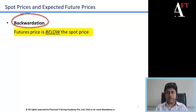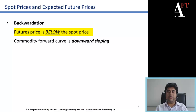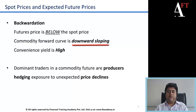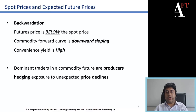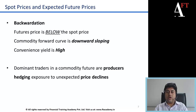The opposite of contango is backwardation, where the futures prices are lower or below the spot price. Here there is in fact high convenience yield and the commodity forward curve is a downward sloping curve. The dominant traders in commodity futures are producers who are hedging their exposure to unexpected price declines — for example, a miner of coal who wants to protect themselves from unexpected price declines of coal.